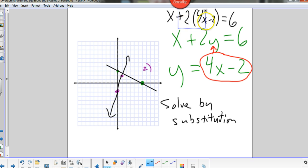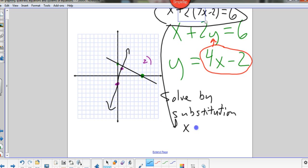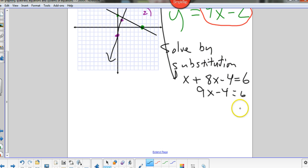So I rewrite the first equation. Instead of x plus 2y, it becomes x plus 2 times, again, 4x minus 2. Because that's what y is equal to. And then I go ahead and solve this. Distribute the 2. So x plus, distribute the 2, it's going to be 8x minus 4 equals 6. So 9x minus 4 equals 6. Add 4 to both sides, we get 9x equals 10. So x equals 10 ninths, or 1 and 1 ninth.